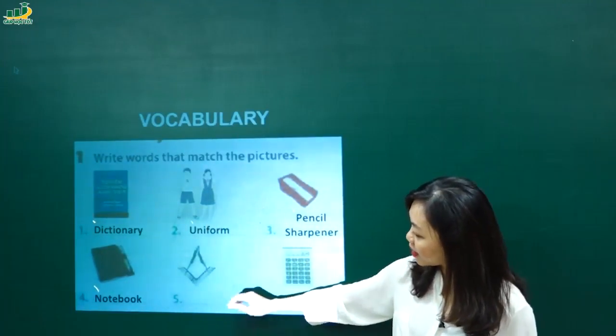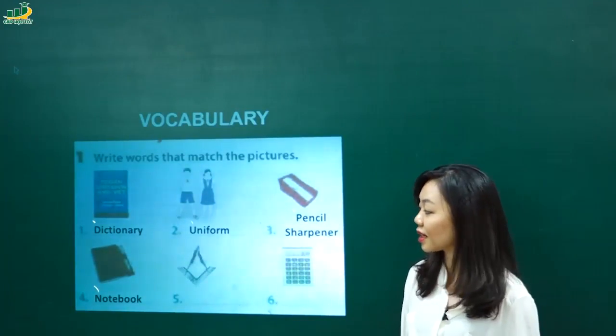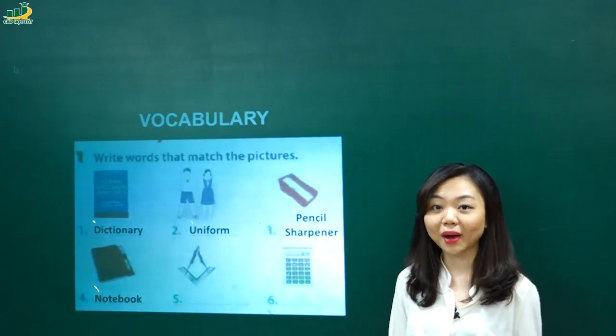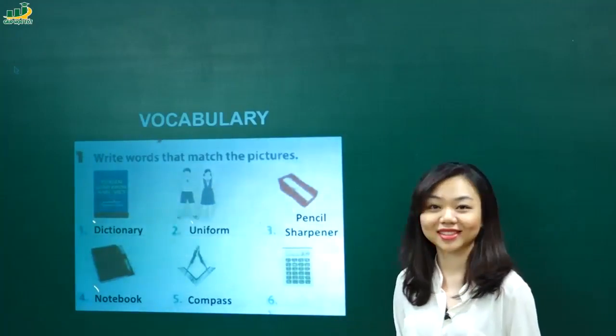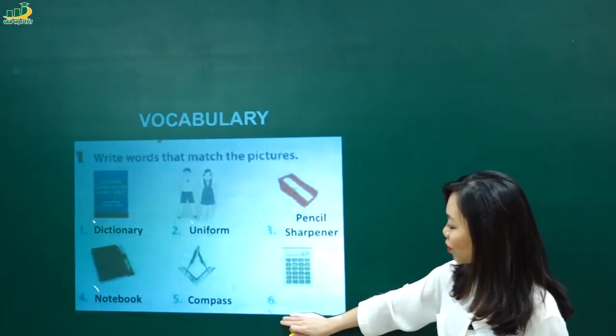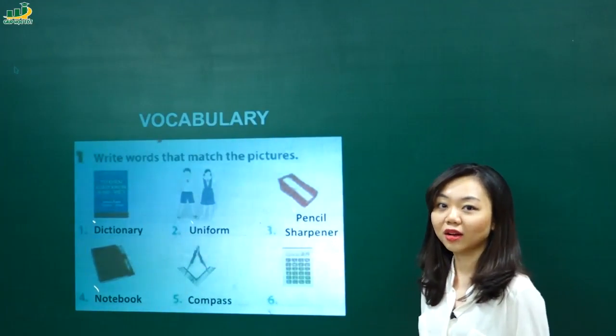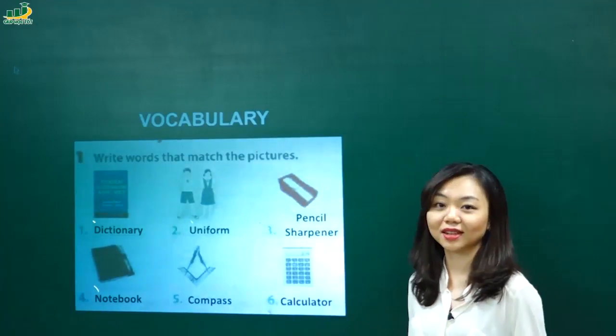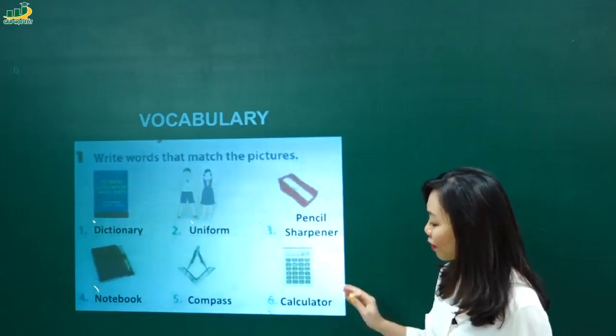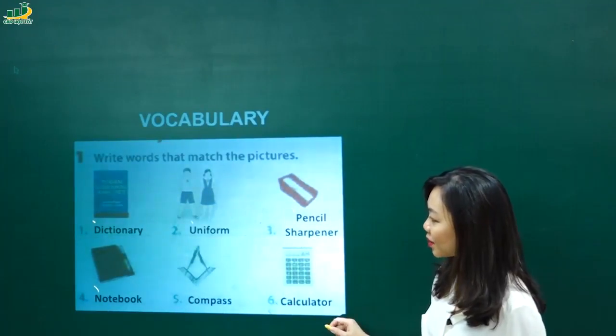Number five. À, nhìn có thể hơi khó một chút khi ở trên màn hình thì nó không được rõ. Thì mình nhìn vào trong sách. Nó chính là cái, cái gì mà để mình có thể vẽ được hình tròn một cách chính xác nhất nhỉ? Đó là compa. Và tiếng Anh là compass. Compass. Chính xác. Và cuối cùng các em nhìn đây. Nó là một cái máy tính cá nhân dùng để tính toán các con số. Đó là calculator. Calculator. Trọng âm đầu tiên đây là một từ có bốn âm tiết. There are four syllables and the first one is stressed. Calculator. Xong.